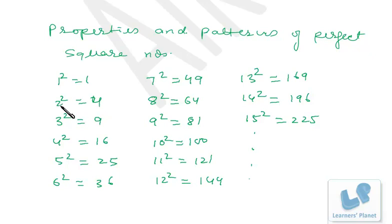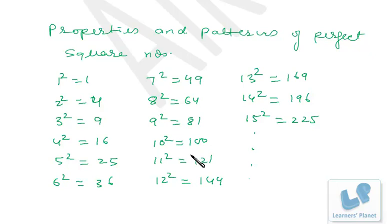Similarly, 2²=4, 4²=16, 6²=36, 8²=64, and so on. The key property is: square of an odd number is odd, and square of an even number is even.